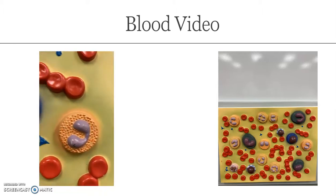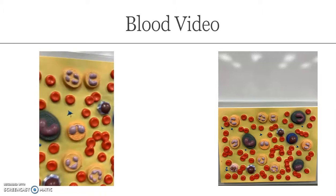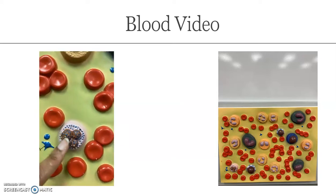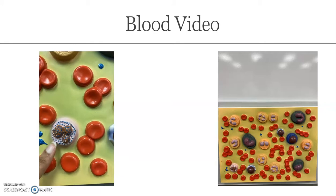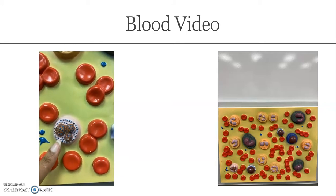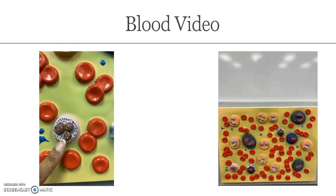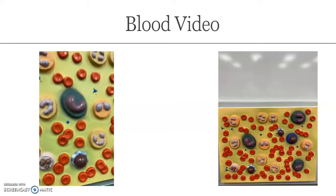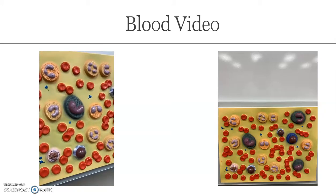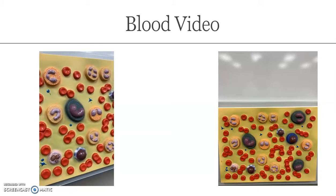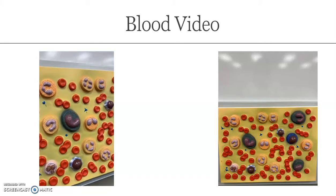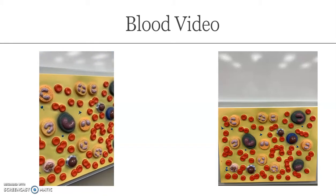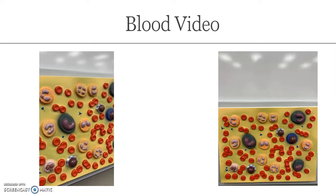And then our last and least abundant white blood cell will be our basophils — there's only one on the model. 'Baso' means blue, so you can see that it has blue stained granules here. So those are your basophils. Our five types of leukocytes from most to least abundant are: neutrophils, lymphocytes, monocytes, eosinophils, and basophils.